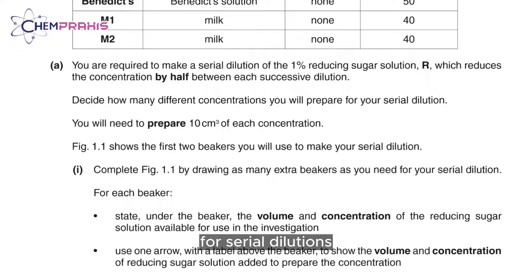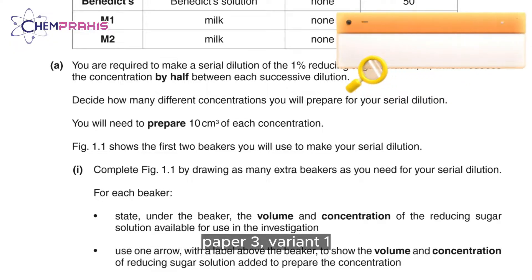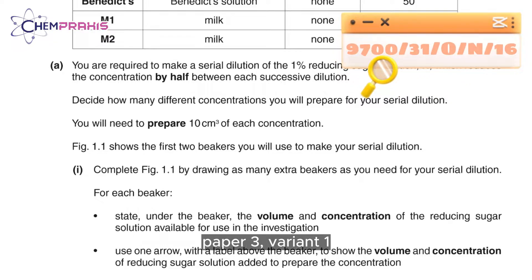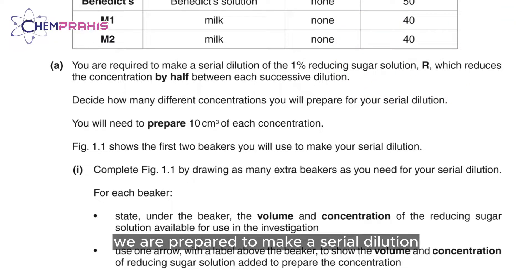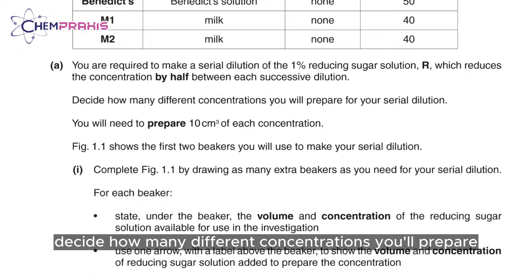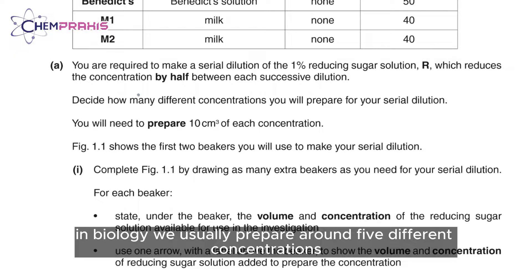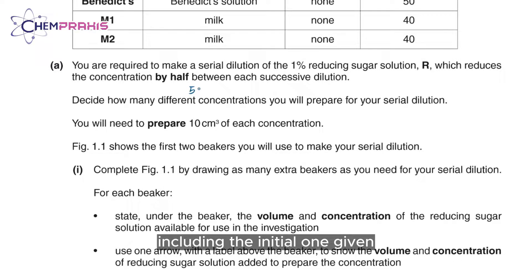For serial dilutions that reduce the concentration by half, we'll be looking at the paper October-November 2016, paper 3 variant 1. In this experiment, we're required to make a serial dilution of 1% reducing sugar solution, which reduces the concentration by half. We usually prepare around 5 different concentrations, including the initial one given.